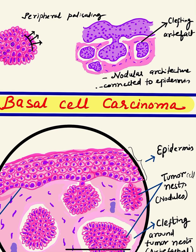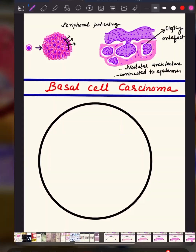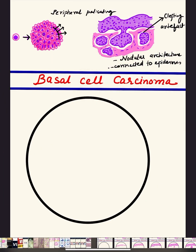The most common variants of BCC include superficial BCC and nodular BCC. In nodular BCC, the nodules invade deep into the dermis and at some point the nodule is connected to the epidermis. These are the points we need to keep in mind before drawing the diagram of BCC. Now let's proceed to drawing.